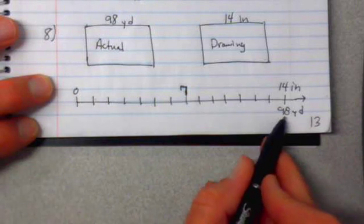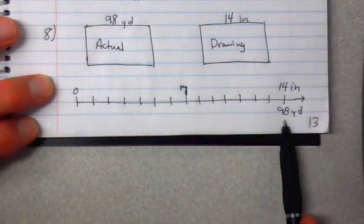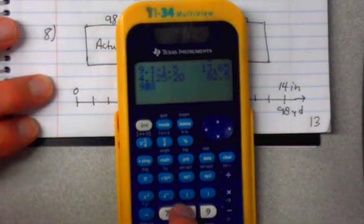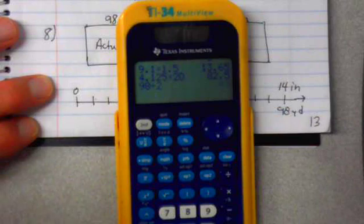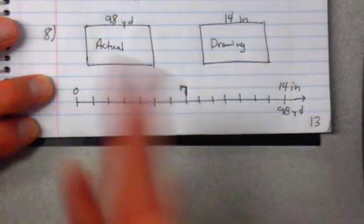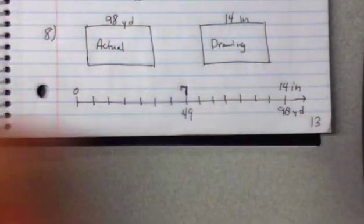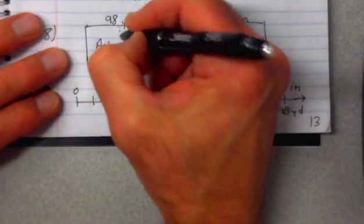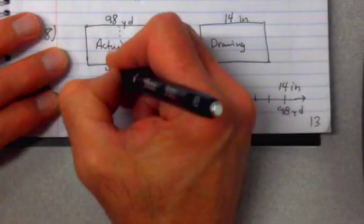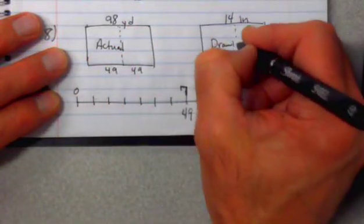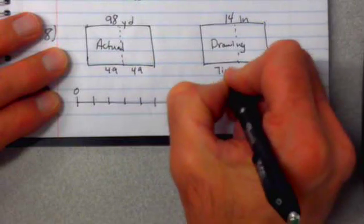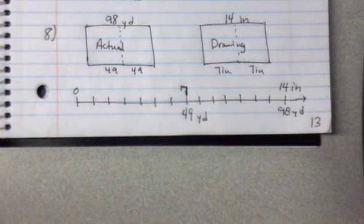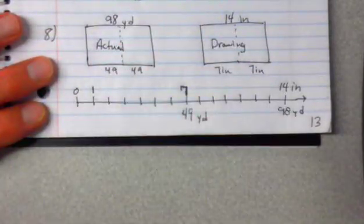That means that this is half of 98. I have a calculator, so I could take the 98 and divide by 2, and I get 49 yards, which is half my field. That would make sense, 49 and 49. And then here's my drawing, 7 inches and 7 inches. So I got to figure out what 1 is.